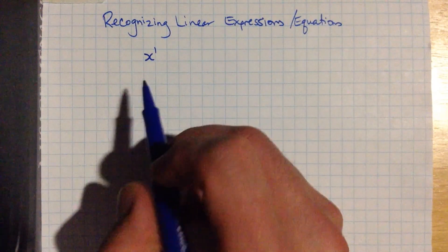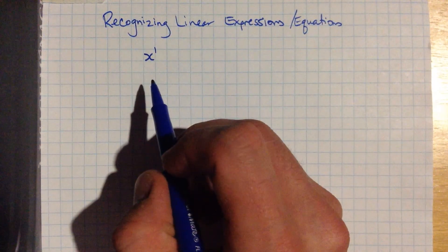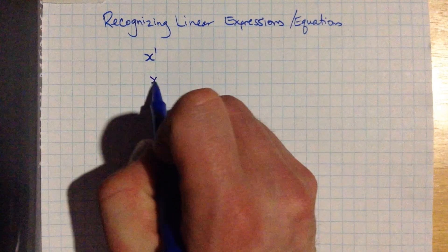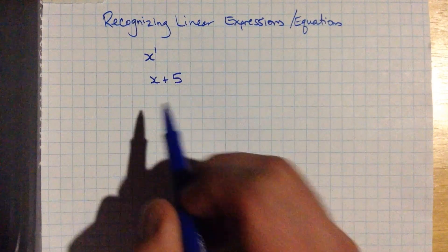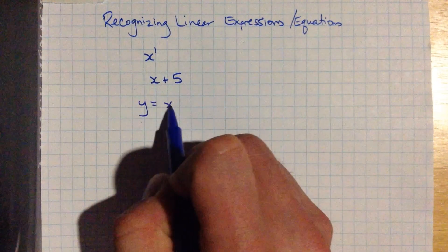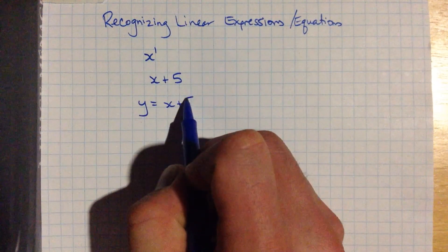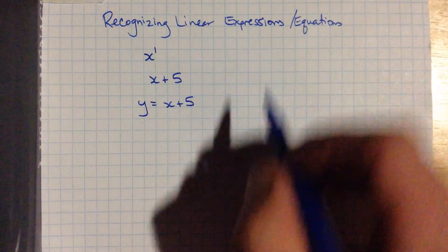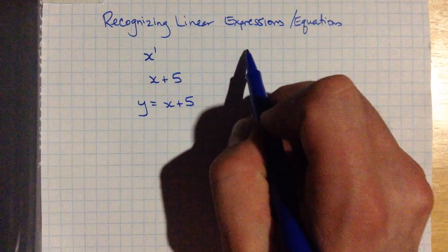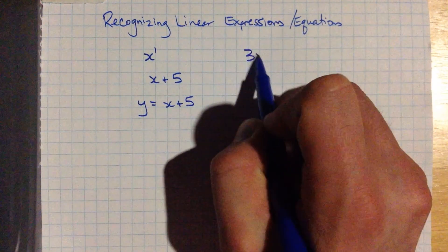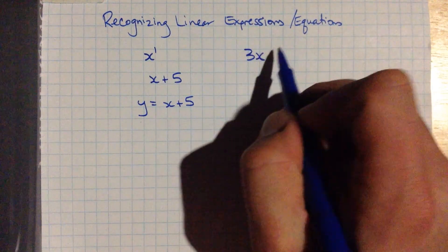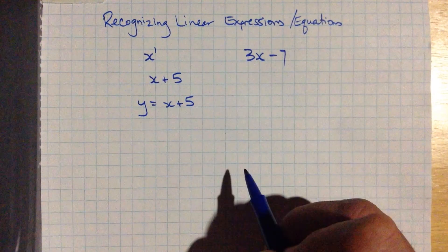For example, just x, or x to the power one, that is a linear expression. So is x plus 5, and sometimes we'll write it like this: y equals x plus 5, because we're going to be graphing that on an xy axis. Here are some other ones — putting a coefficient in front of the x: 3x, or 3 times x minus 7.